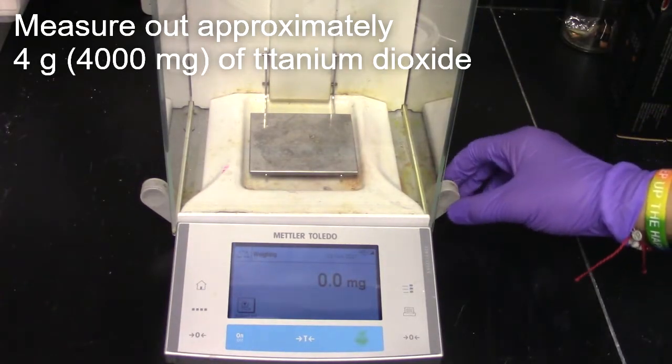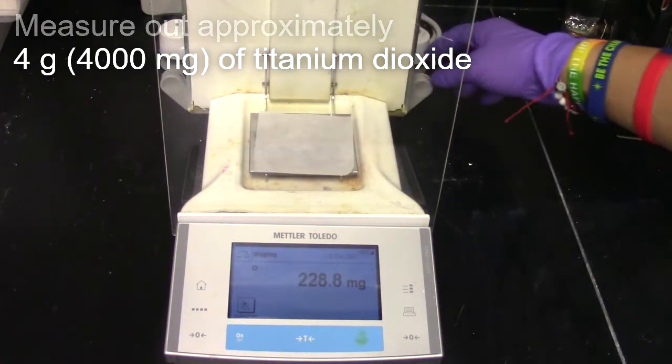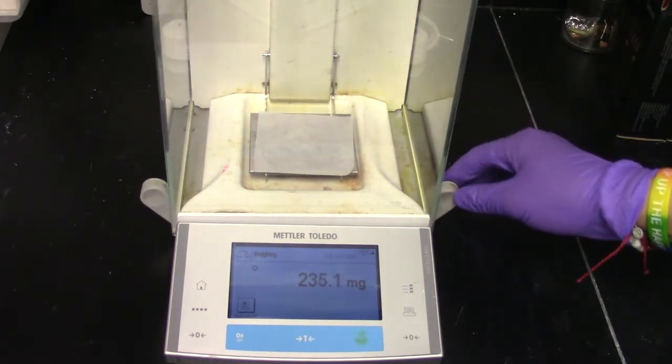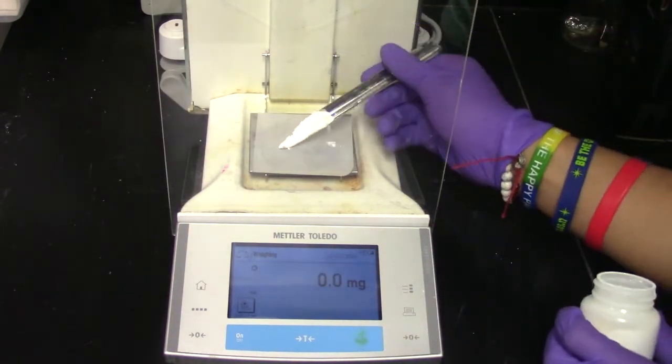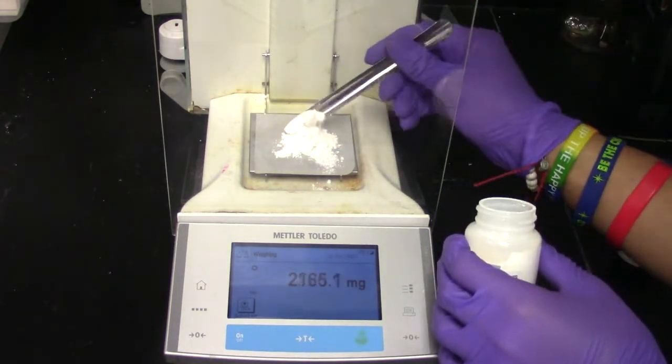Measure out approximately 4 grams or 4,000 milligrams of the titanium dioxide. As a note, measuring below or above the 4 grams will not have a significant effect on the paste.